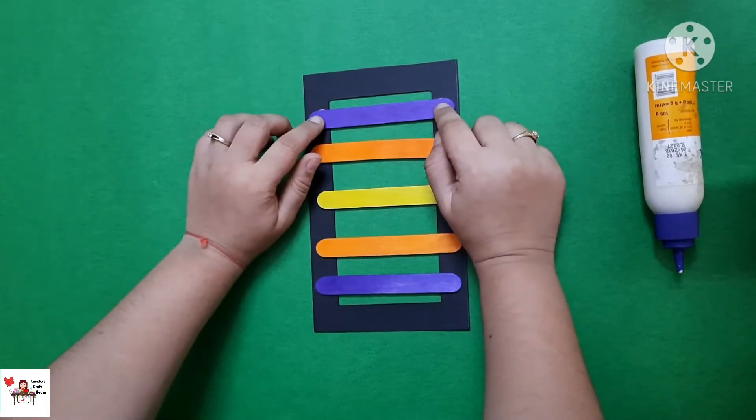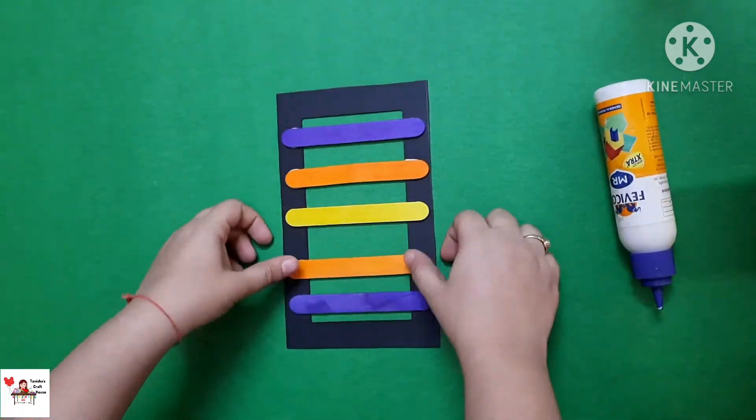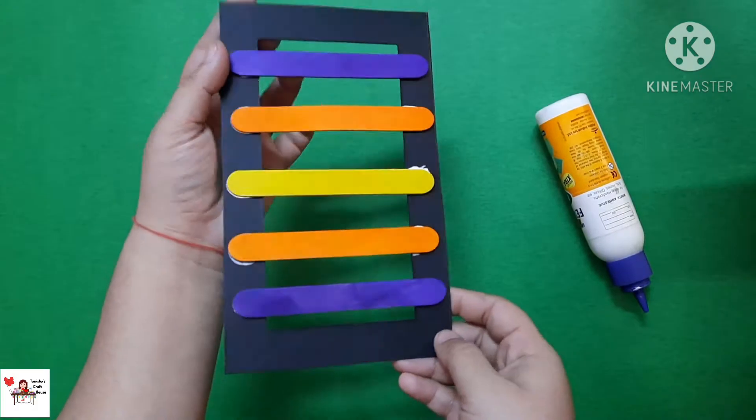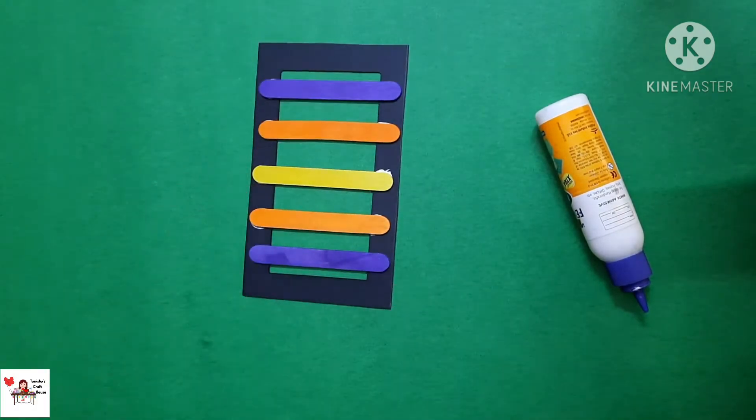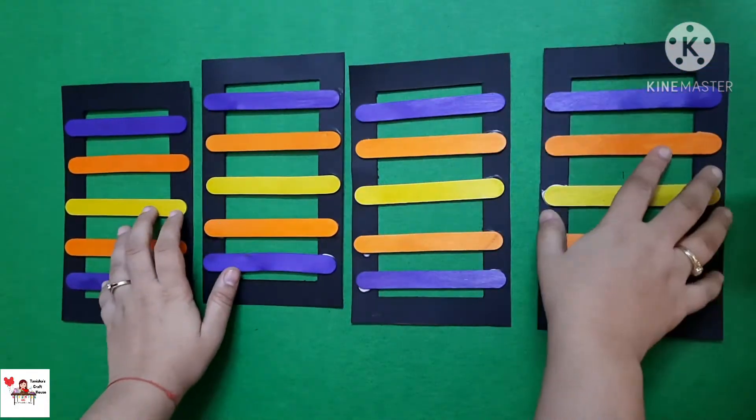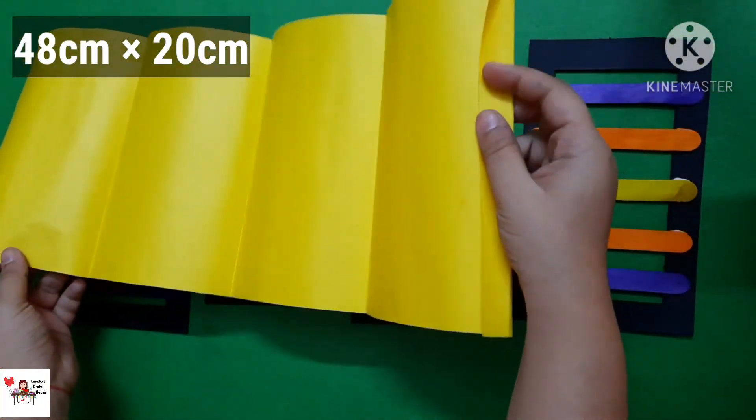For these ice cream sticks I've taken the plain ice cream sticks and just painted them with some acrylic paints. So you can do that as well, otherwise if you want you can just stick the plain ice cream sticks also. So after doing that I've made four of these in total, that means I made three more of these.